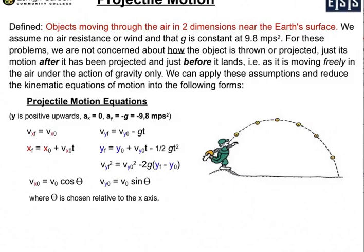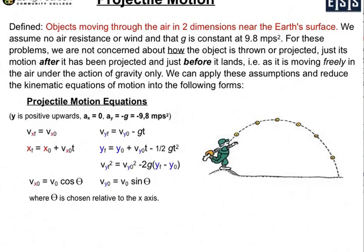Today's video will review projectile motion — when we have objects moving through the air in two dimensions near the Earth's surface. I previously did a video involving objects moving through the air in one dimension; for projectile motion we're just extending that to two directions. We're not concerned about how the object is thrown or projected, just its motion after it has been projected and just before it lands — moving freely under the action of gravity only.